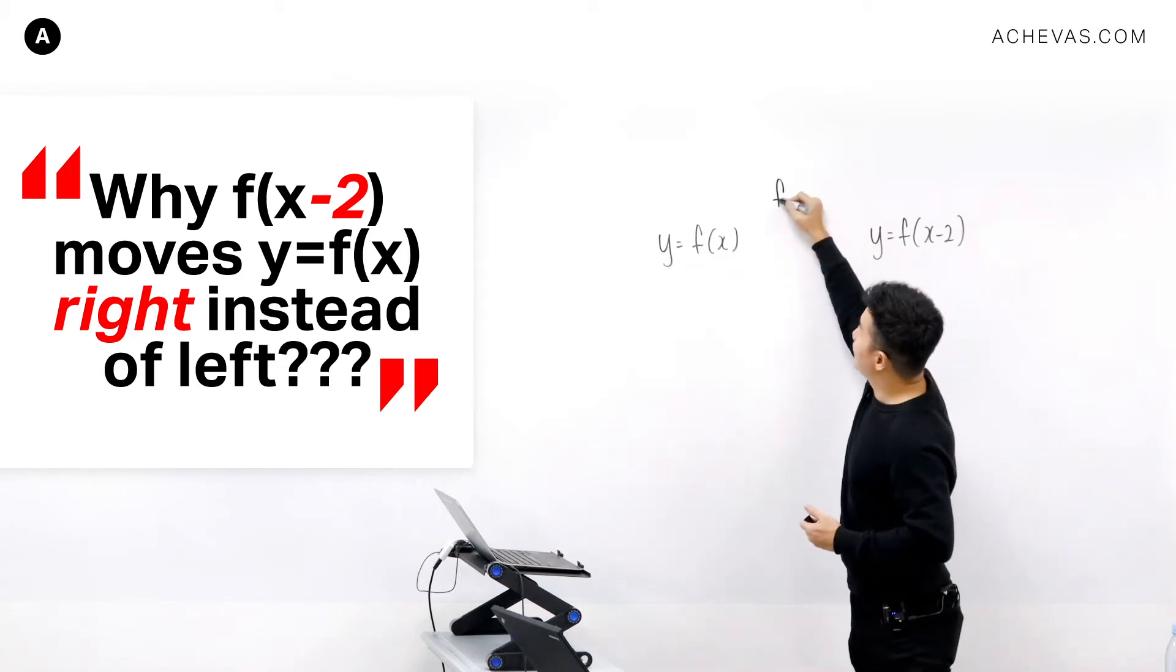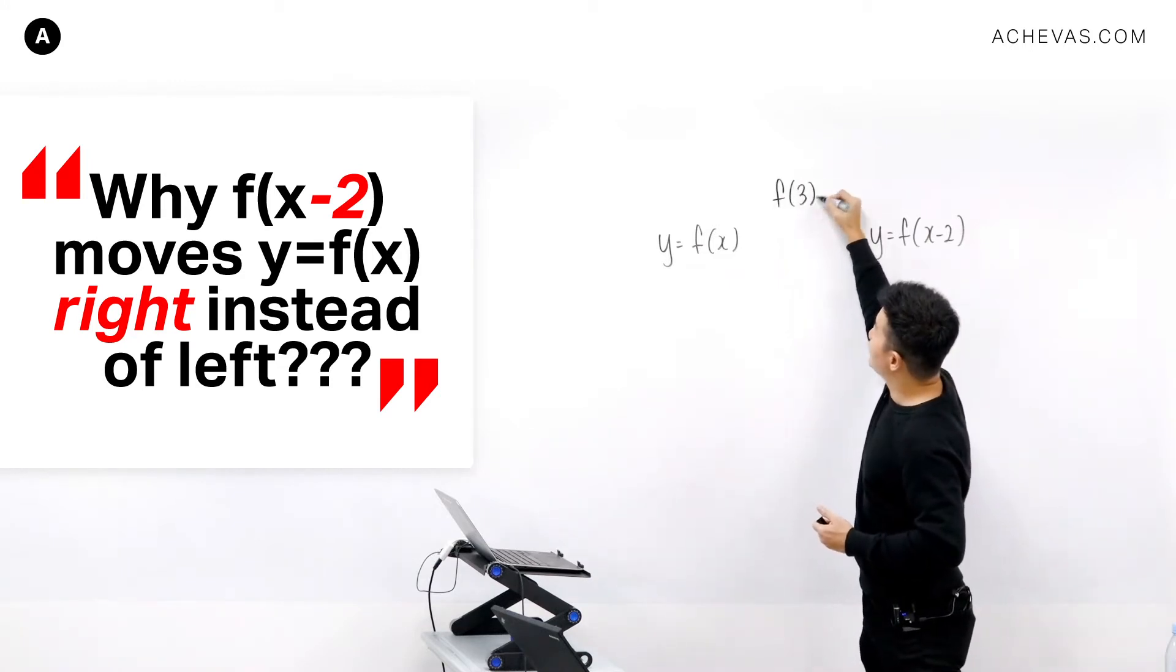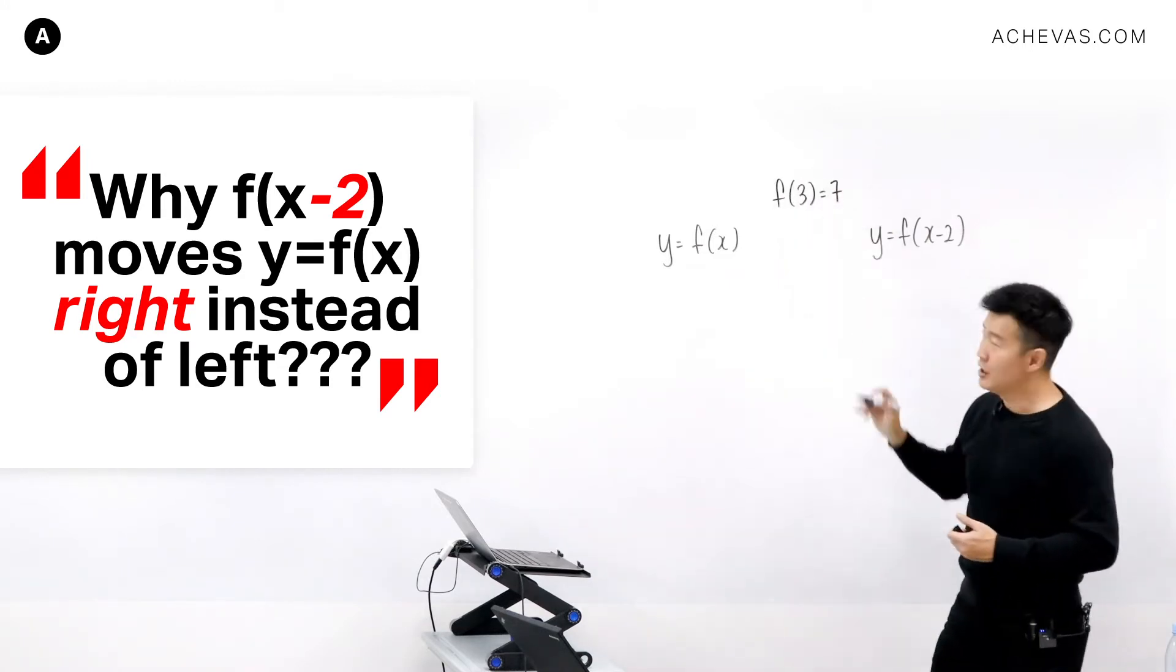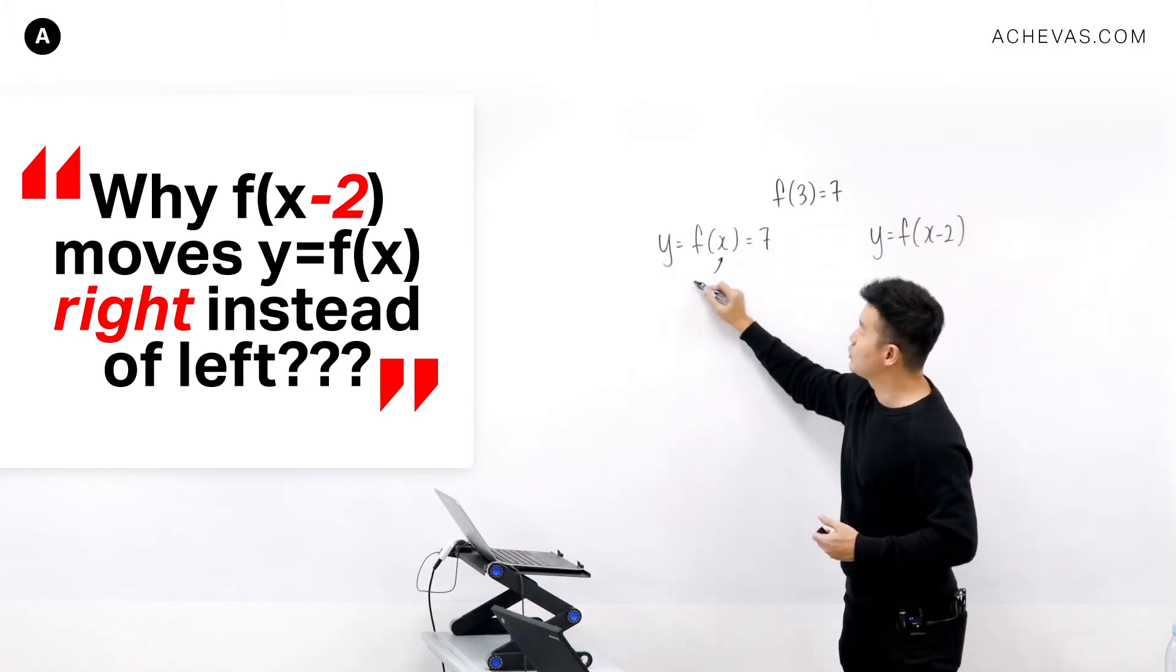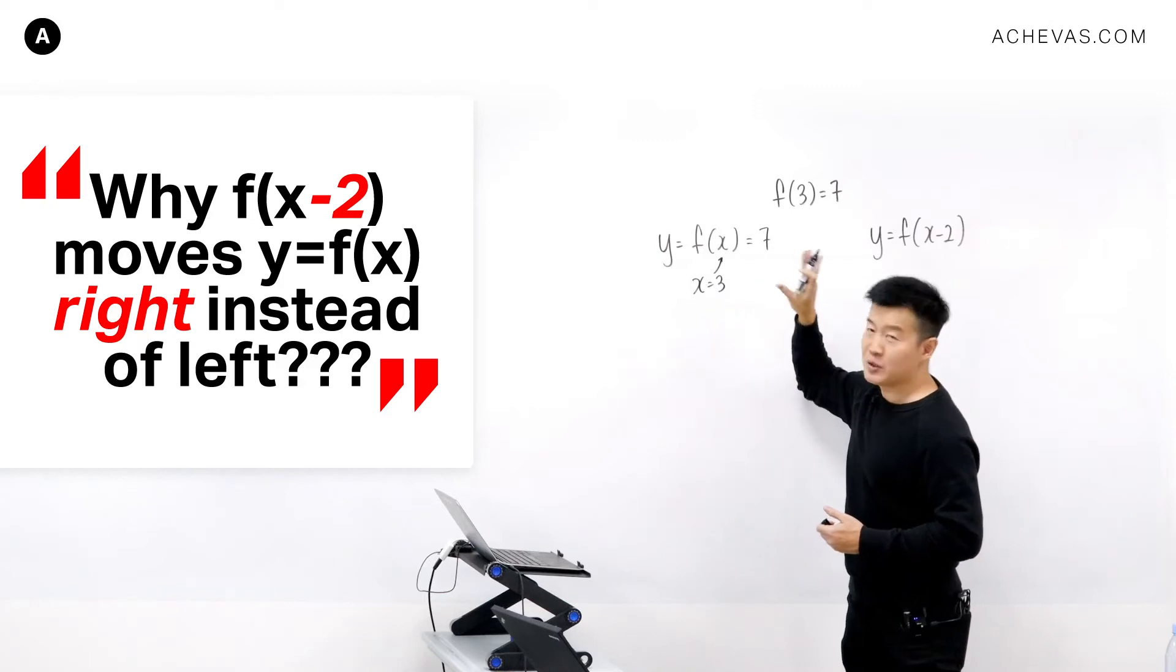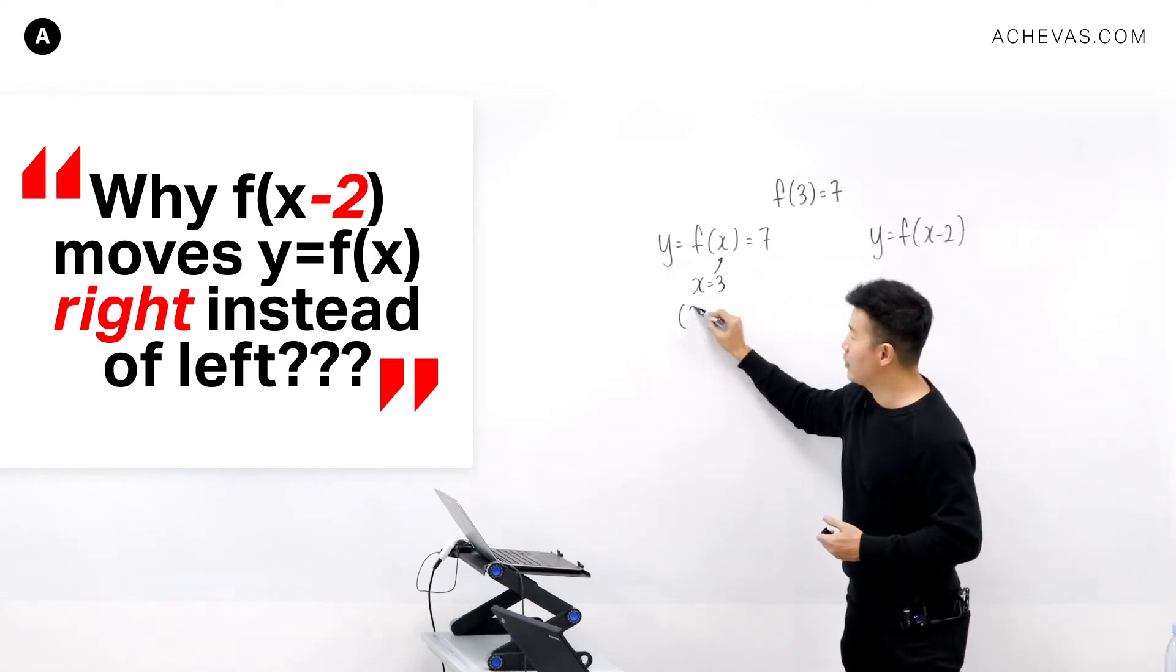So if I were to work on the function f and imagine it as if when I put in a 3, I'm going to get back a 7. So on this particular graph, if I were to get back a 7, what I need to do is let x be equal to 3, which means that on this graph I will have the point (3,7).